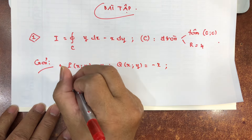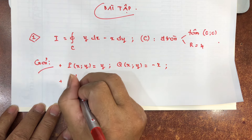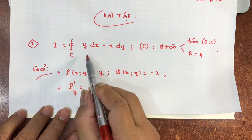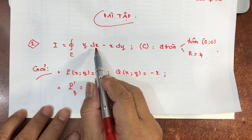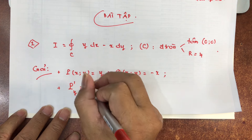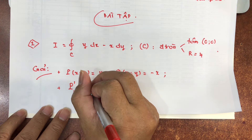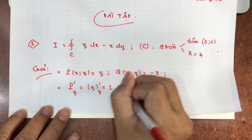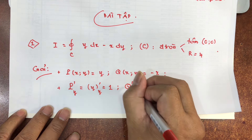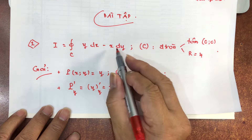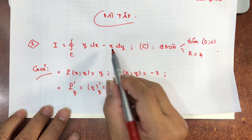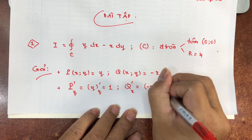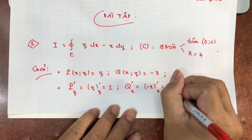Tính các đạo hàm riêng. Đạo hàm riêng của P theo biến y: hàm P là y, lấy đạo hàm riêng theo y, dễ thấy bằng 1. Đạo hàm riêng của Q theo biến y: Q là -x, lấy đạo hàm theo y, rõ ràng bằng -1.